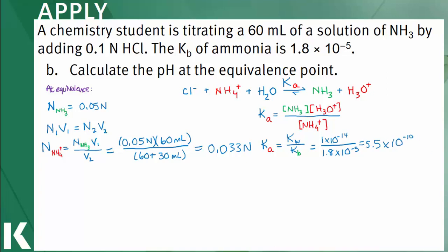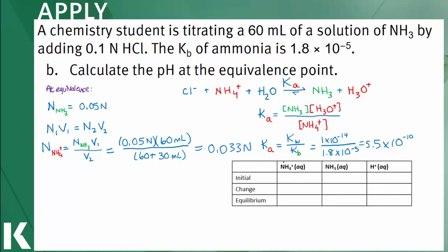At this point, it's time to bring up our ICE table. The initial calculated concentration of ammonium is 0.033 normal. The initial concentration before dissociation of ammonia and hydrogen are both 0. The change will be minus x for ammonium and plus x for both ammonia and the hydrogen ion. The equilibrium concentration will be 0.033 minus x for ammonium and plus x for ammonia and hydrogen ion.